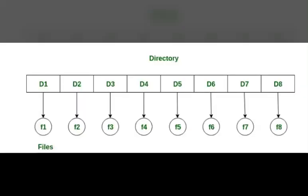The first one is the single level directory. This is the simplest directory structure — all files are contained in the same directory, which makes it easy to support and understand. However, it has significant limitations when the number of files increases or when the system has more than one user.